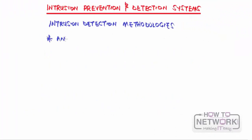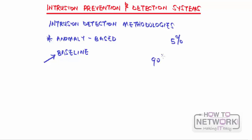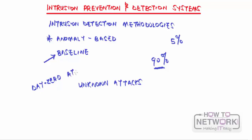The second method is anomaly-based detection. An anomaly is something that is not normal. This method compares activities against a baseline of normal behavior. Any activity that exceeds certain thresholds is considered an attack. For example, a department that normally uses about five percent of bandwidth suddenly consuming ninety percent indicates a problem. This method is very effective against previously unknown attacks and can provide protection against day-zero attacks.